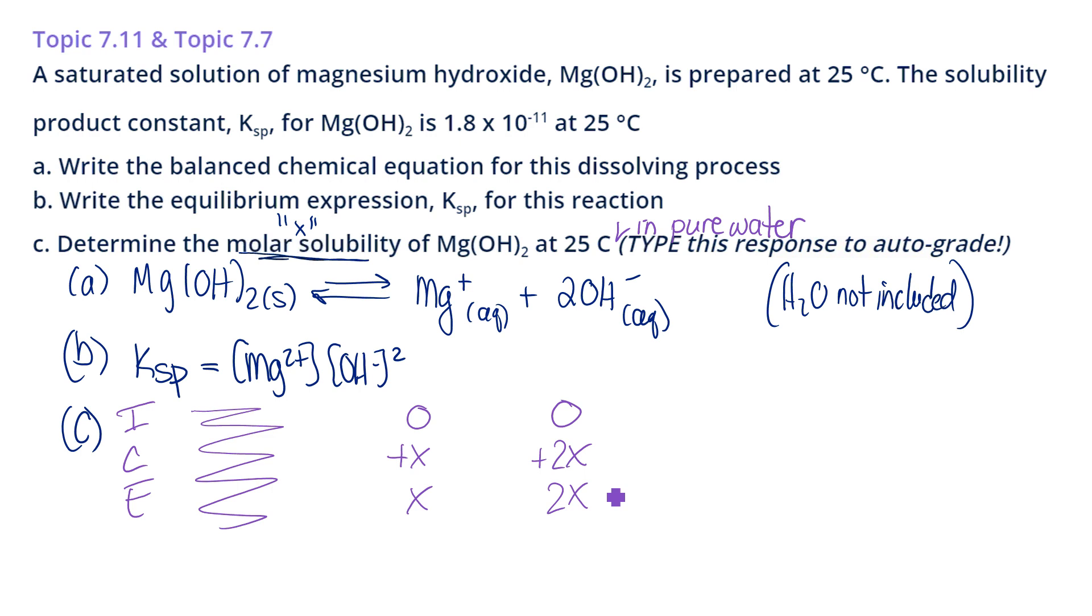So now I'm going to go and plug these numbers into my K expression, which remember I wrote right over here. So here's my K expression. Now I'm going to plug in what I know. So I know the value of K is 1.8 times 10 to the negative 11. I know that magnesium, I'm using the letter X to represent magnesium.